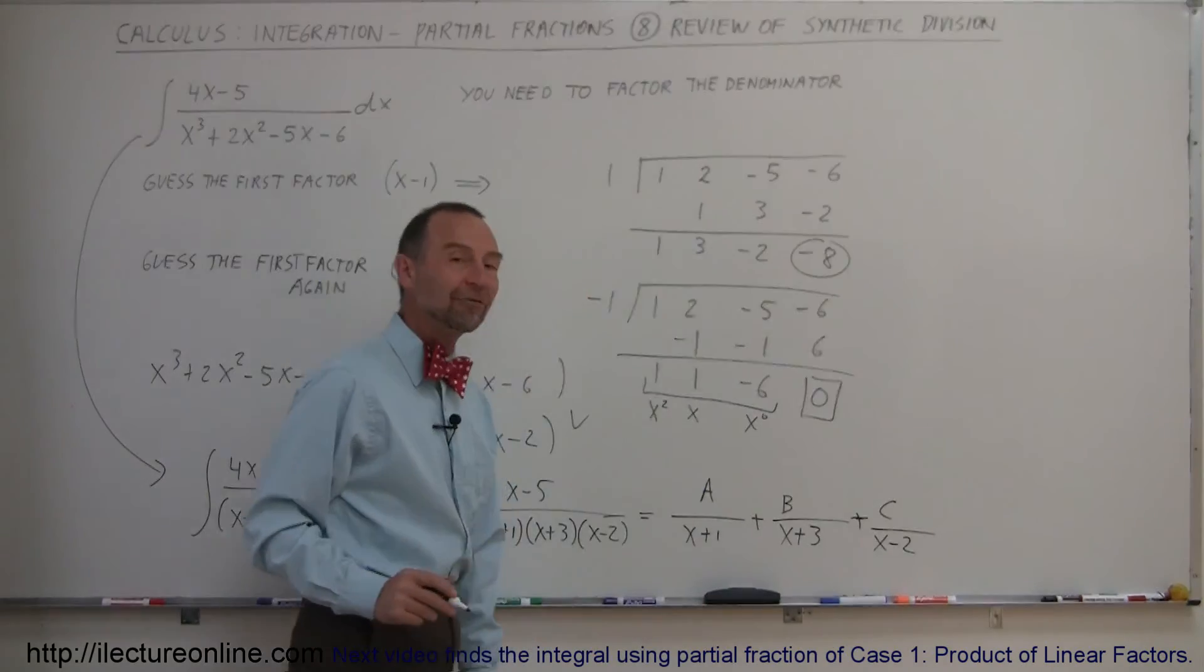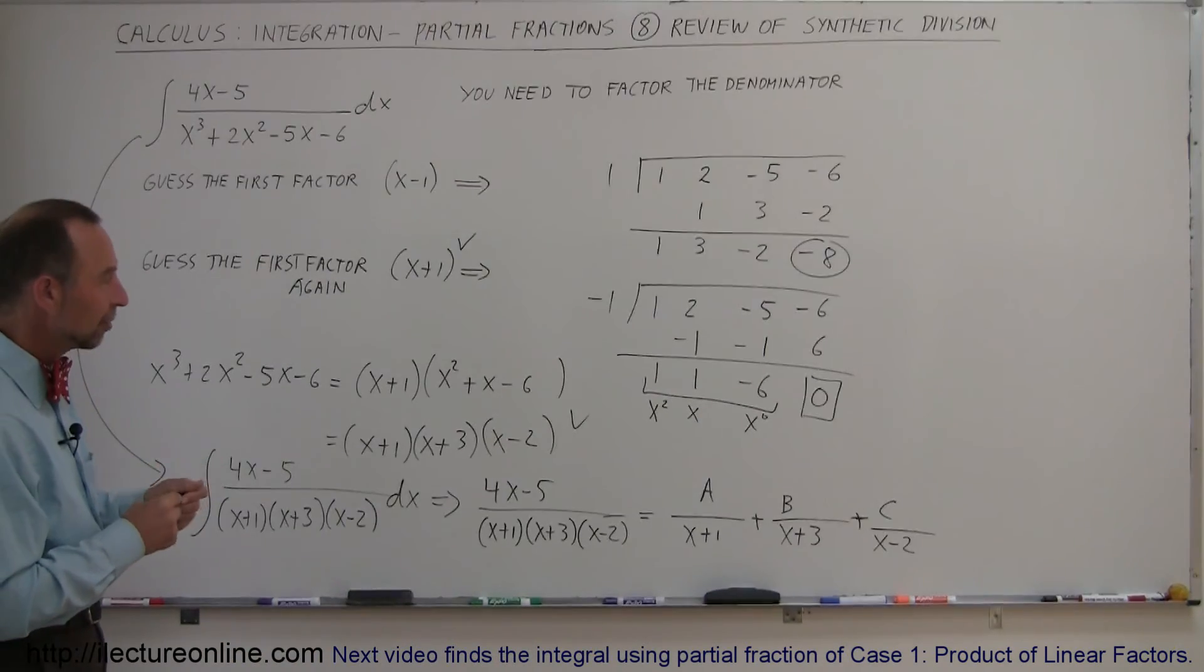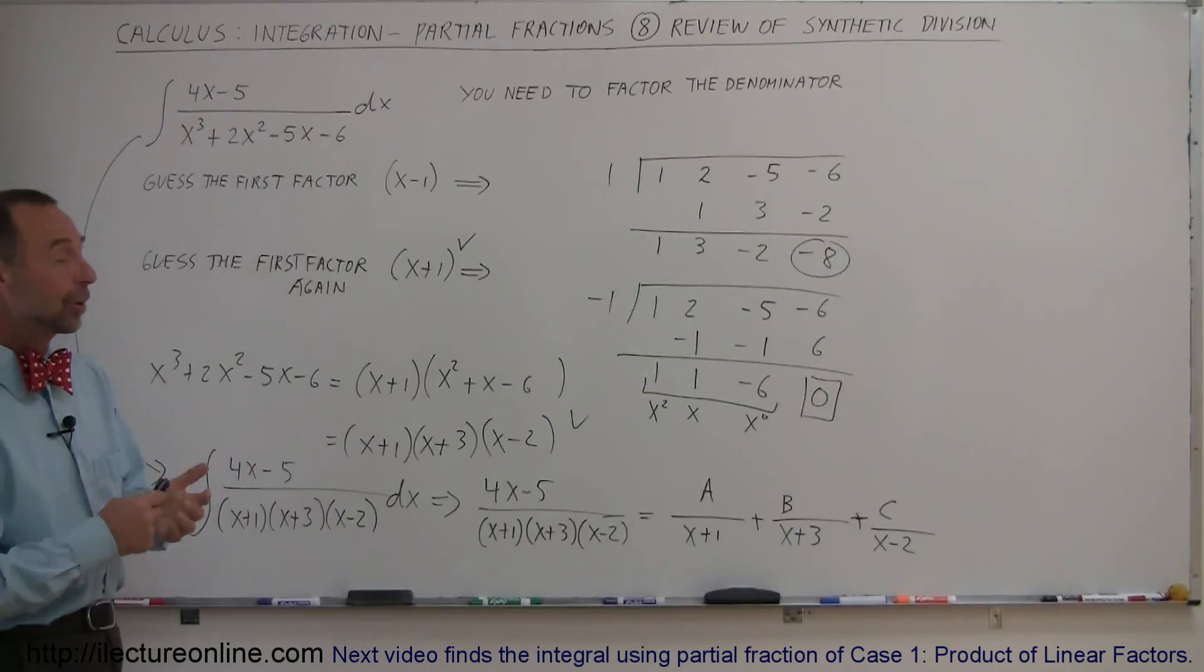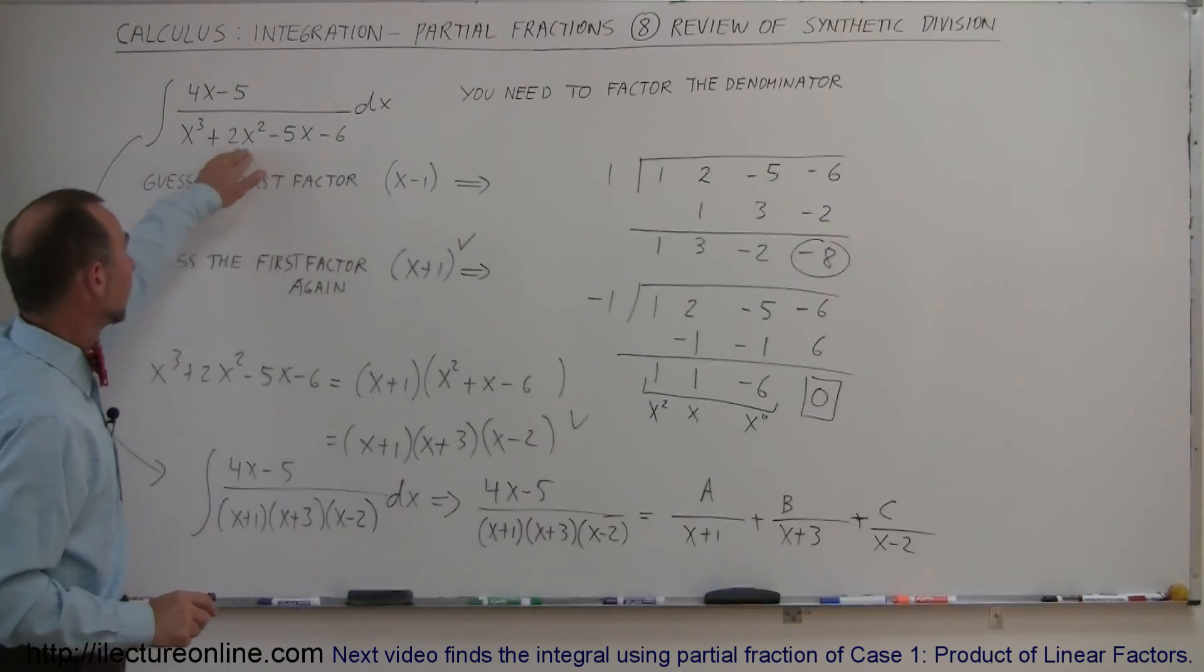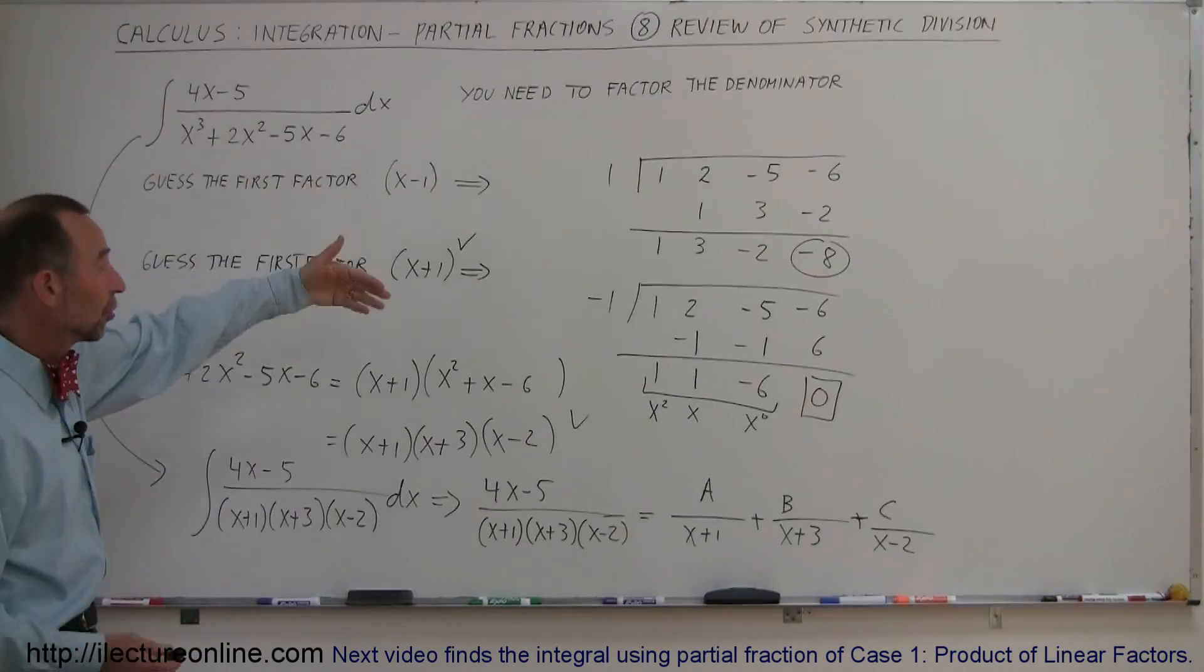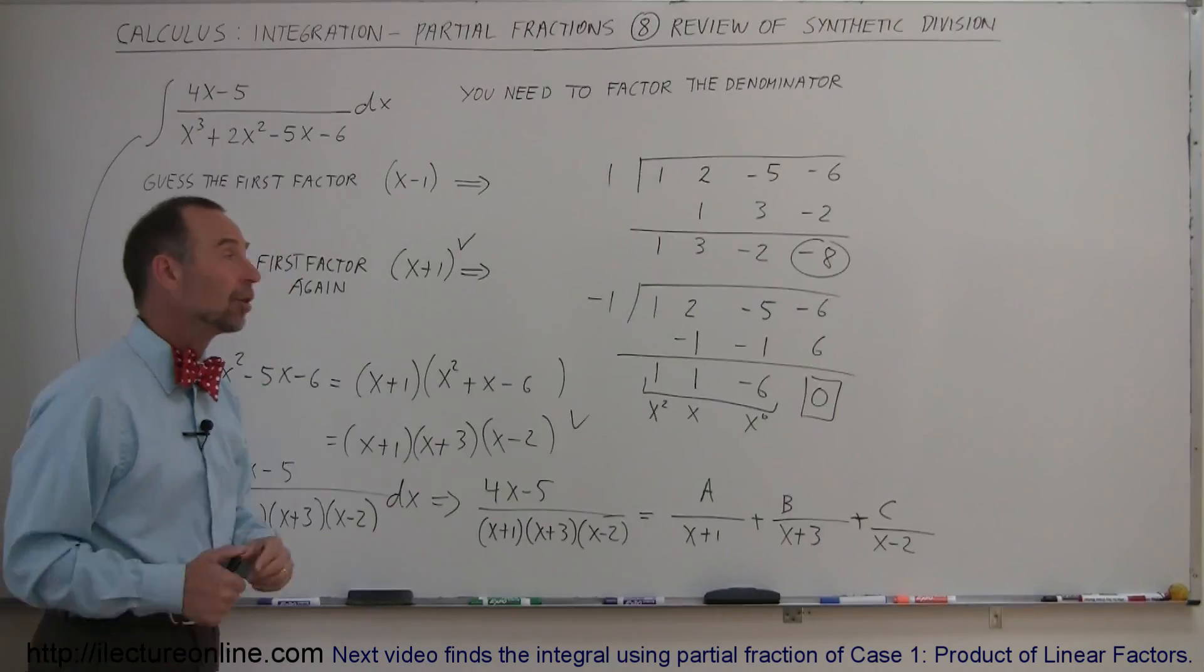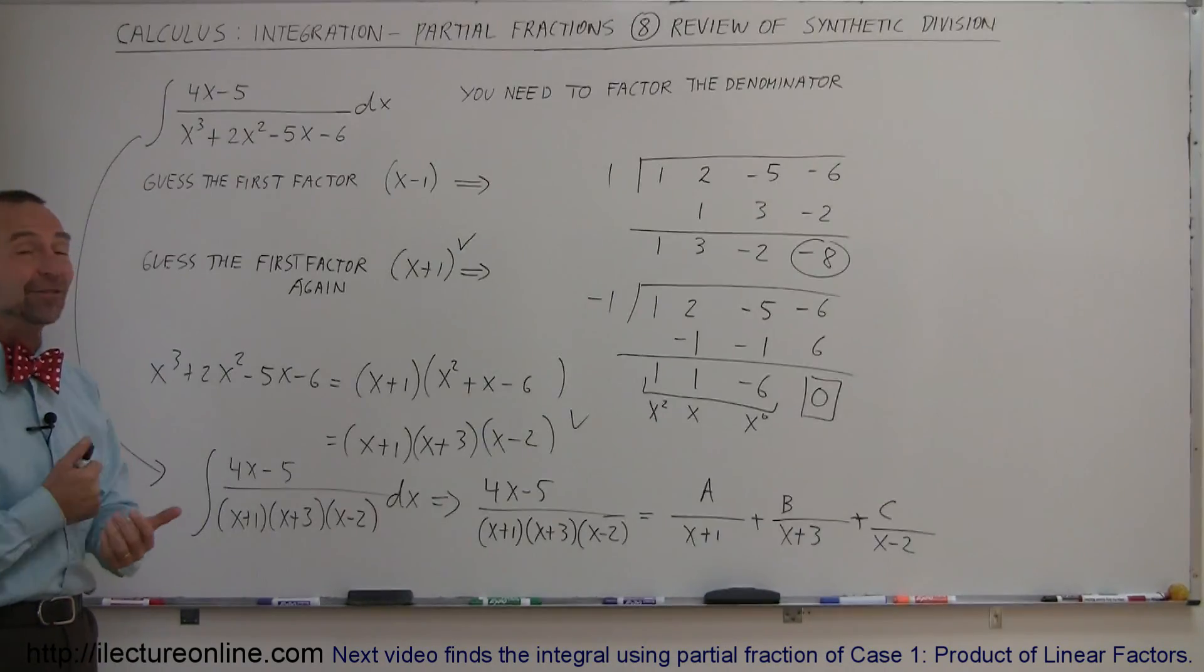Then I go ahead and find out what A, B, and C are equal to using our typical techniques for partial fractions, and now we're able to integrate it. I just wanted to show you again that if you end up with something like this in the denominator, or sometimes to the fourth or fifth power, then you'll have to use some mechanism to factor the denominator, and synthetic division is just a perfect way to do it. That's how we do it.